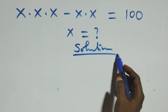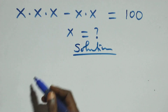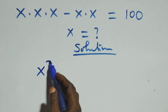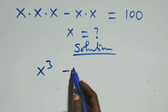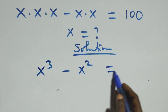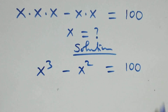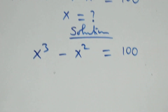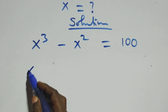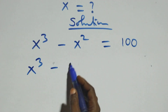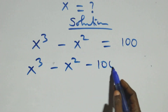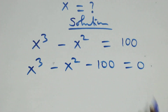What we have here: we can multiply to get x times x times x, which gives us x cube, minus x times x which is x square, equals to 100 on the other side. Taking 100 to the left side it becomes minus, so we have x cube minus x square minus 100 equals to 0.